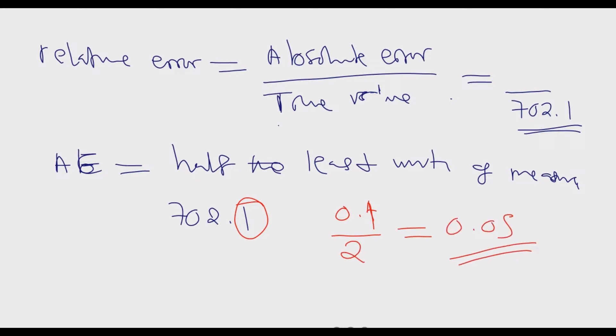This is the absolute error. It's the error we make in measurement such that when corrected to one decimal place, it gives a number close to 702.1. It's this number that we put here.